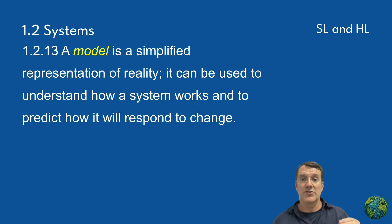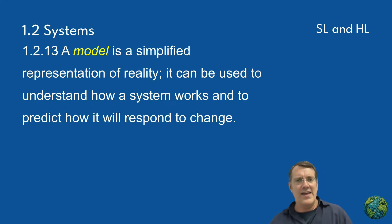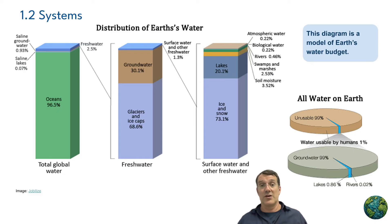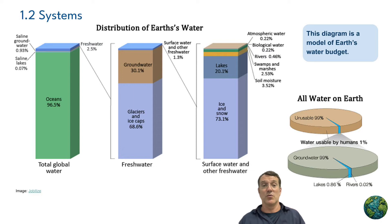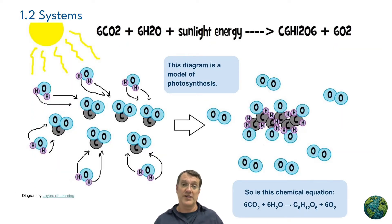Models are simplified representations of reality — essentially tools for understanding complex systems and predicting their behavior. They can take many different forms: diagrams, graphs, equations, or verbal descriptions. For example, Earth's water budget can be modeled as a diagram showing the flows between different water reservoirs or storages. Photosynthesis can be represented by a simple chemical equation like you see here on the screen, or a more detailed diagram illustrating the process within a leaf.